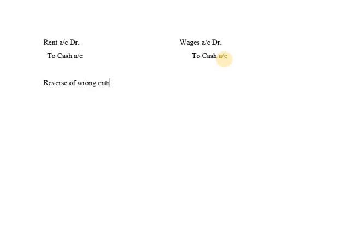The wrong entry recorded was Wages Account Debit to Cash Account, when it should have been Rent Account Debit to Cash Account. The procedure for the rectifying entry is: reverse of wrong entry plus correct entry.